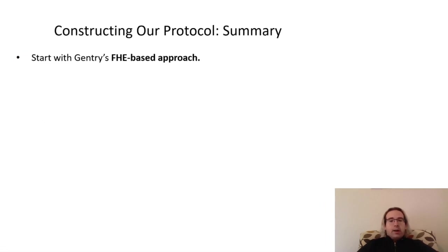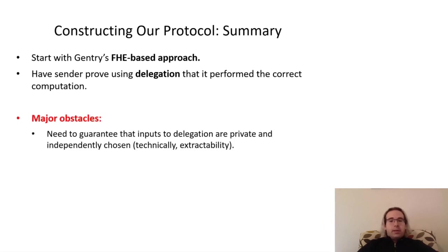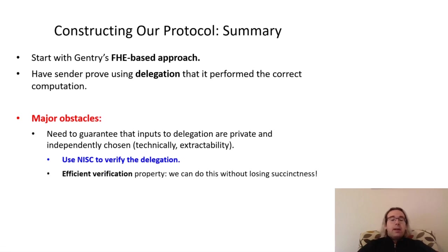To build up our protocol, we'll start with a semi-honest approach using FHE, and then use delegation to prove that the sender's homomorphic evaluation was computed correctly. Of course, this by itself is far from a complete solution. First of all, delegation inherently requires revealing both parties' inputs — in this case, the FHE ciphertexts. Despite being encrypted, we will still need to ensure that each ciphertext is hidden from the other party, both for the sake of privacy and input independence, or, in technical terms, extractability of inputs. To that end, we'll use the underlying secure computation protocol to perform the verification step of the delegation while hiding the respective inputs. Notably, even though the inner protocol isn't inherently succinct, the fact that the verification step of the delegation is by definition efficient means that computing it in the inner protocol won't invalidate the succinctness of our final protocol.